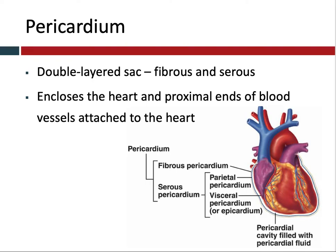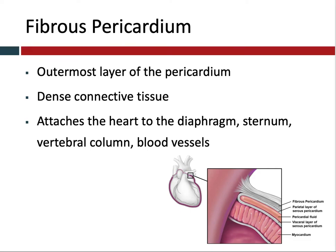The fibrous pericardium is the outer layer of the pericardium. In this diagram you can see it's this light and dark gray layer. It's made out of dense connective tissue and its job is to attach the heart to all the things that it is attached to, so that the heart itself doesn't bounce all around as it beats. Instead, the fibrous pericardium keeps it in one place, which is attached to the diaphragm, the sternum, the vertebral column, and the blood vessels.